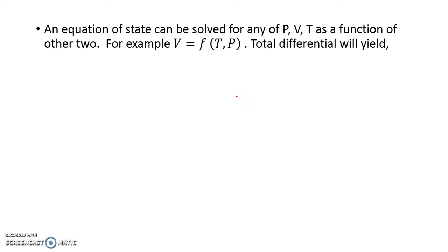We can write the property as a function of other two parameters. So V is a function of temperature and pressure. If I differentiate it with respect to temperature and pressure partially, we get the total differential of V.